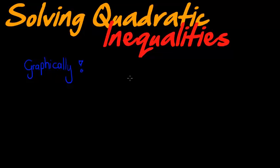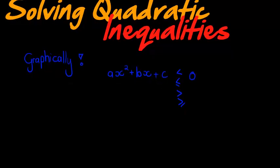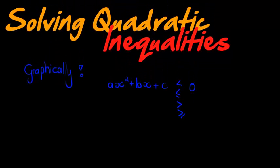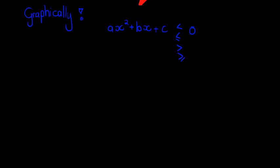So first of all, a quadratic inequality — we're solving quadratic inequalities graphically. A quadratic inequality can be simplified. That would be our first step: get it into a format of ax squared plus bx plus c is less than, less than or equal to, greater than, or greater than or equal to zero. That would be a quadratic inequality.